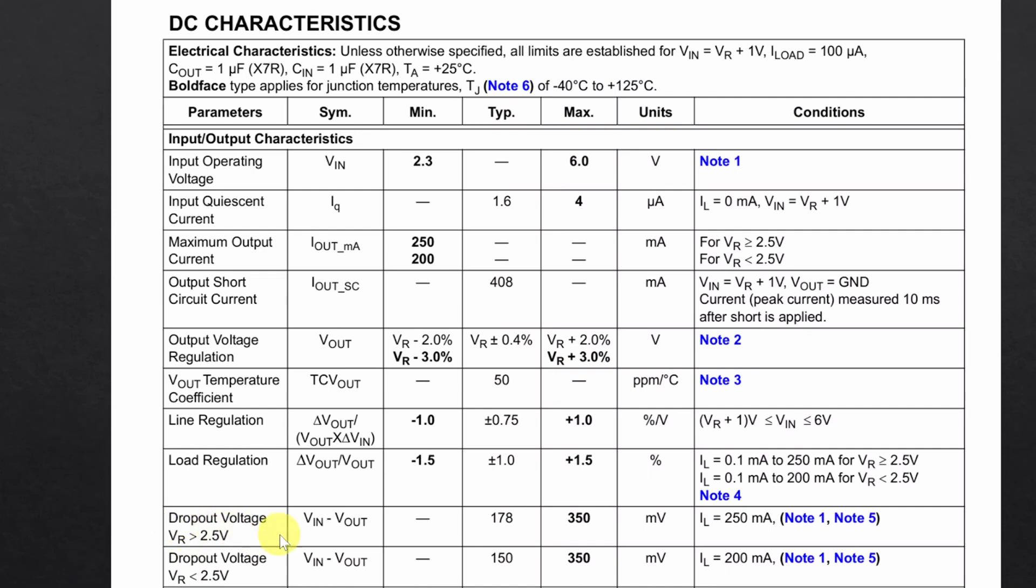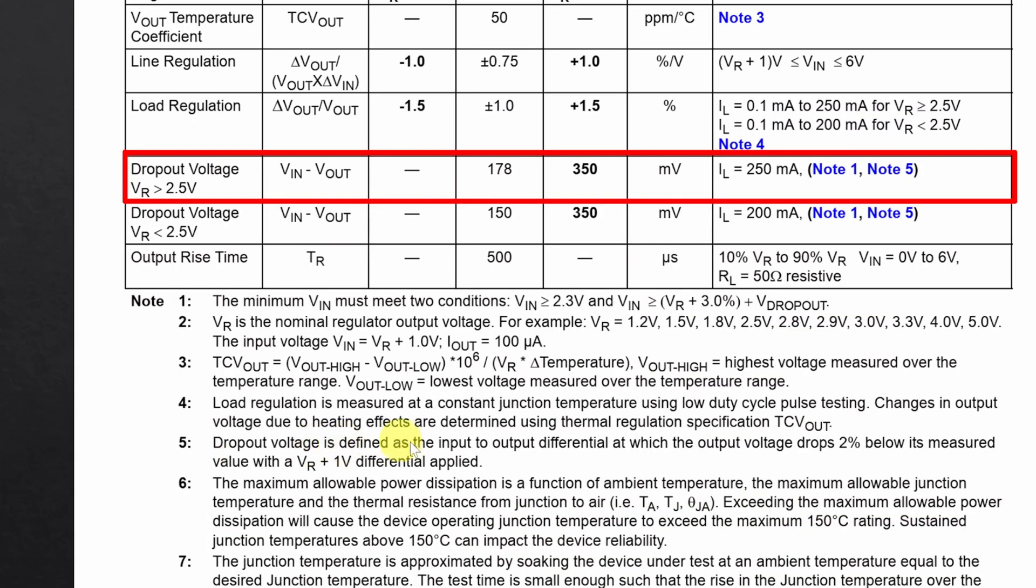Moving on to the parameter dropout voltage. Typical value of dropout voltage is 178mV for 250mA of output current. Here in note 5 they also said how they measured the dropout voltage.